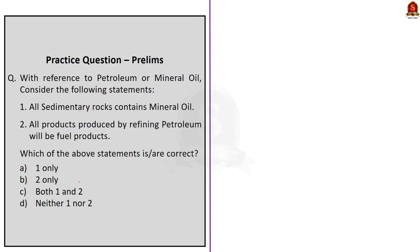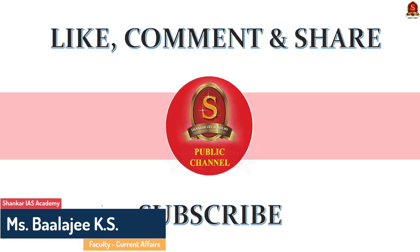The fourth question gives two statements about petroleum or mineral oil. Statement 1: All sedimentary rocks contain mineral oils. This is wrong — not all sedimentary rocks contain mineral oil. Statement 2: All products produced by refining petroleum are fuel products. This is also incorrect — not all products from refining petroleum are fuel products; there are also non-fuel products like petrochemical feedstock, base oil, mineral oil, intermediaries, and base polymers. Since both statements are incorrect, the correct answer is option D — neither one nor two.